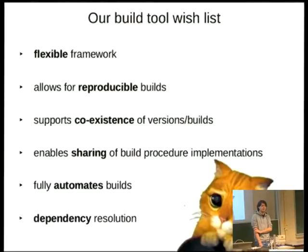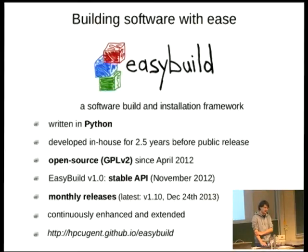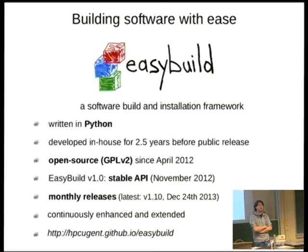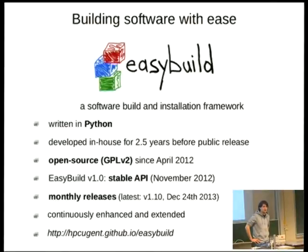Everything has to be fully automated, with dependency resolution, because we install dependencies. We don't want to build everything one by one — we just say 'build this and all its dependencies.' EasyBuild is written in Python because we like Python and use it for all our tools. EasyBuild was developed in-house for two and a half years before we made it public, completely rewritten with good practices in mind, and released as open source in 2012.